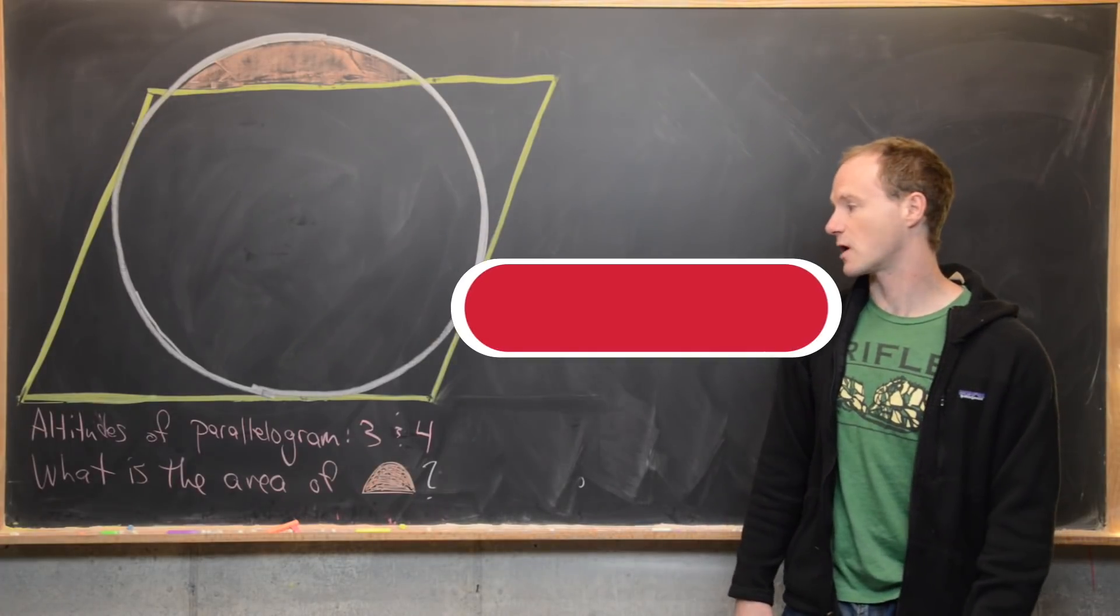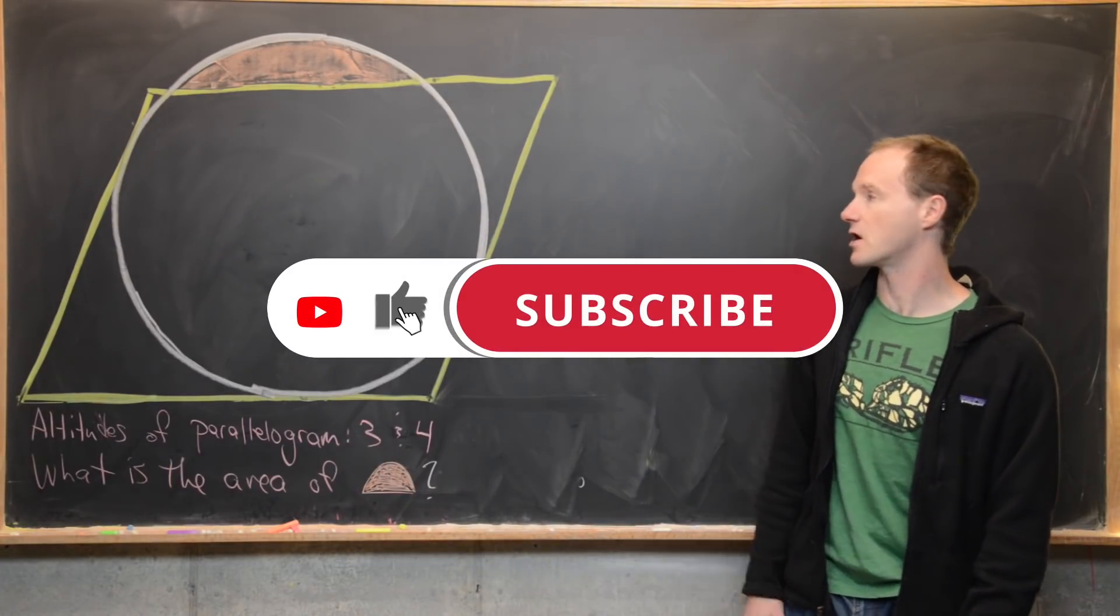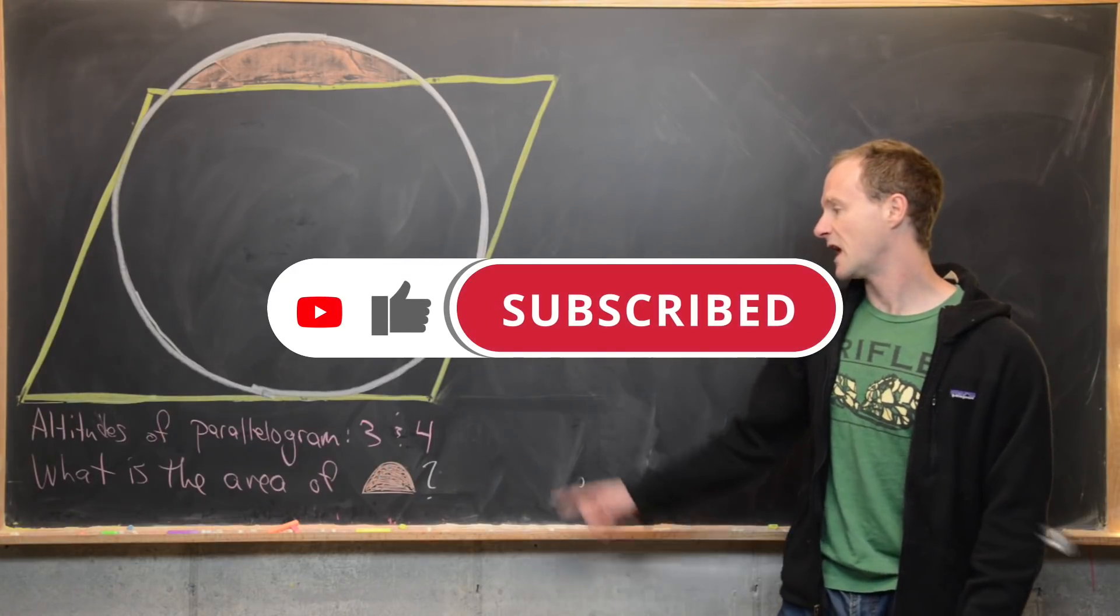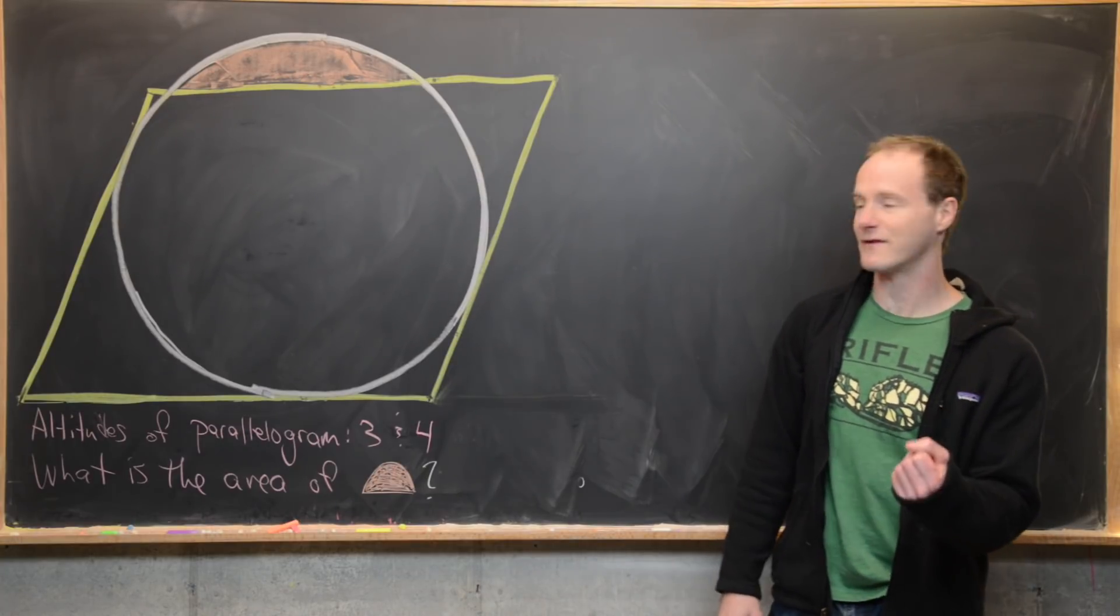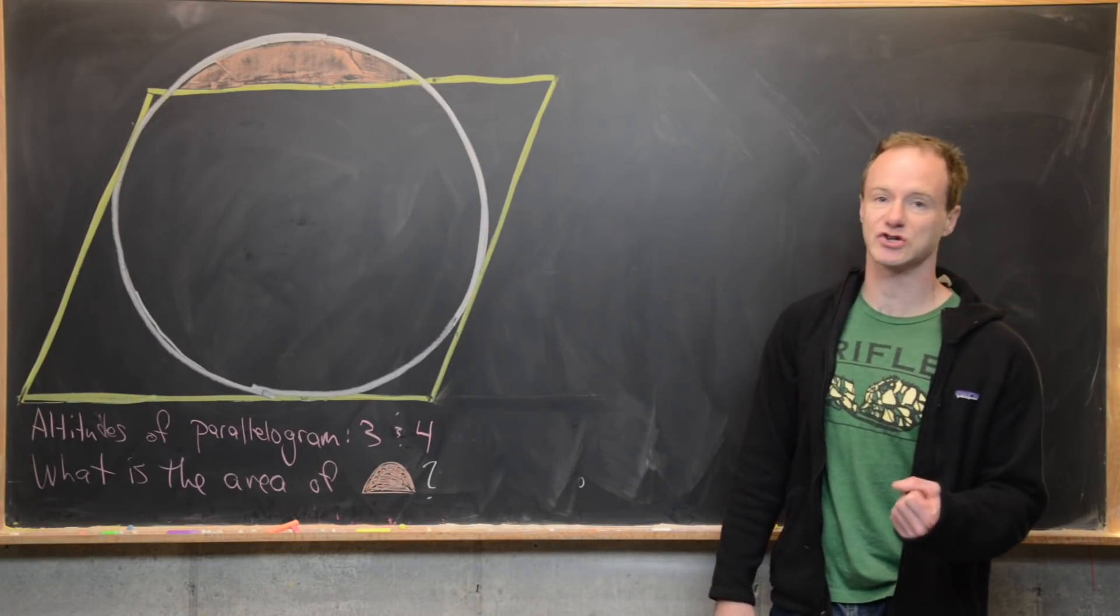Here we're going to look at a nice and quick geometry problem. So let's say we've got a parallelogram which I've drawn in yellow and it has altitudes three and four, and then inside of that we have a circle which is not quite inscribed.